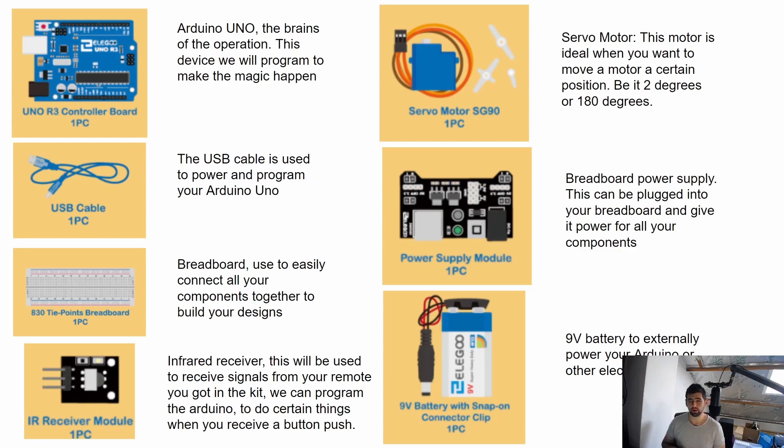You'll see all the components you have in here and what they're actually used for. For example, the Arduino, the brains of our operation, which we're going to program later on in lesson four or five. And then we get many other different things, for example a joystick, we've got a moisture sensor we can plug into soil and measure the water, we've got a remote control to turn on maybe lights.